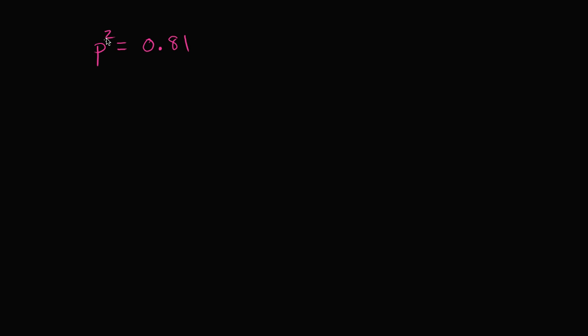Well, one thing we could do is we could say, look, if p squared is equal to 0.81, another way of expressing this is that p is going to be equal to the positive or negative square root of 0.81.